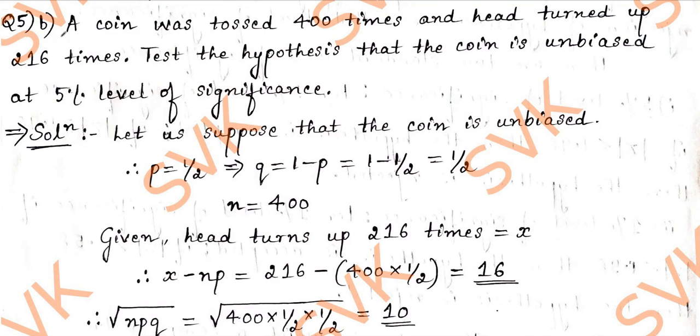Now we shall solve question number 5B. The question is as follows: a coin was tossed 400 times and head turned up 216 times. Test the hypothesis that the coin is unbiased at 5% level of significance.